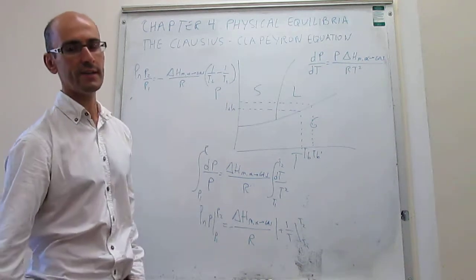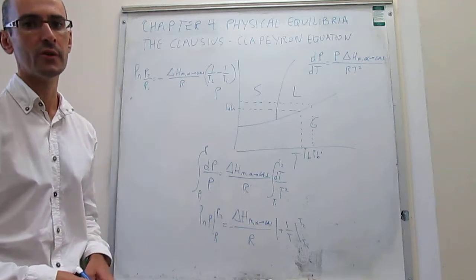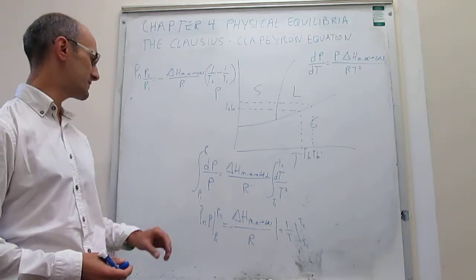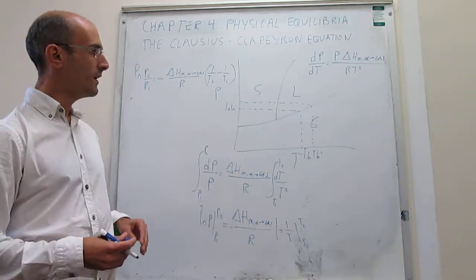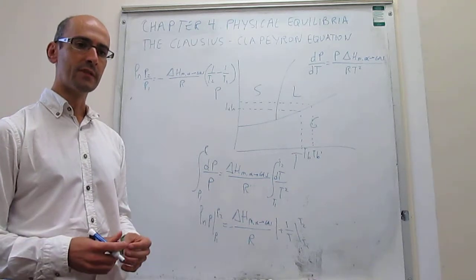That is your integrated Clausius-Clapeyron equation when you have definite limits in the integral. Why do we use this equation?